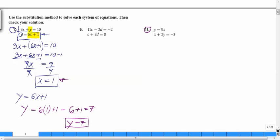Let's do 11. Why do you see number 11? y is already there, y is 9x. Plug it in to whatever you have. So your second equation now becomes x plus 2 times y, which is 9x, equals negative 3.